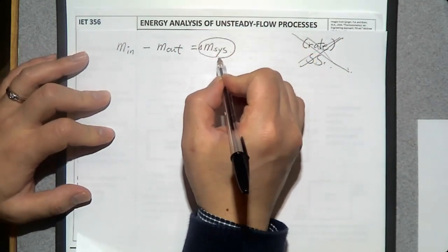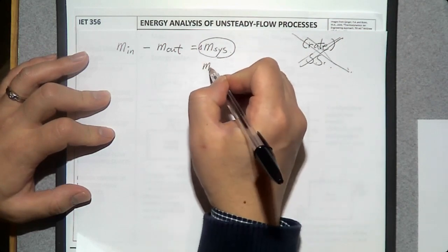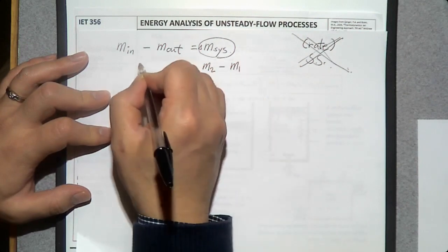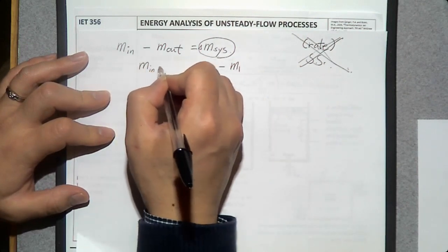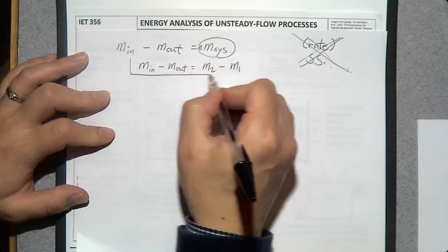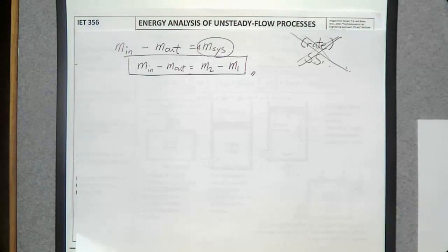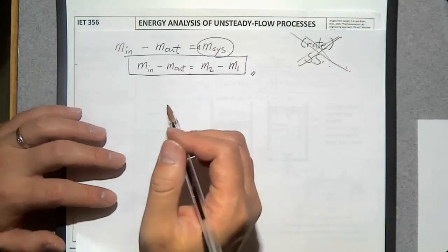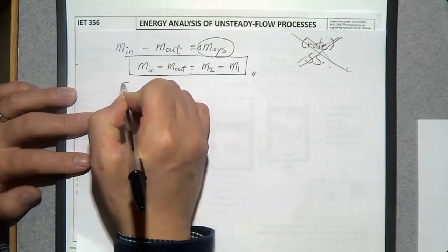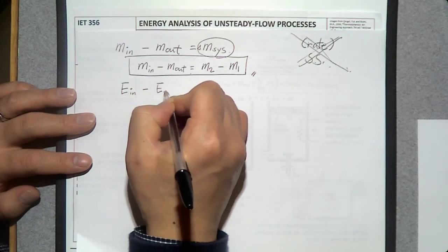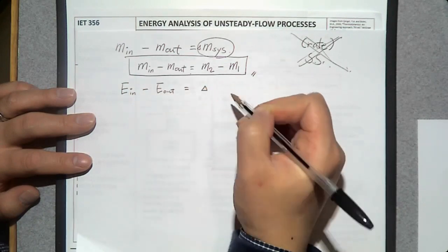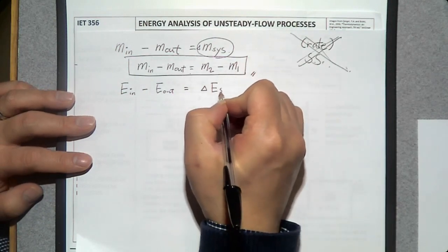How can you determine the change of energy of a system? Simply: final mass M2 minus initial mass M1. So the difference between mass transfer in and out equals M2 minus M1 — that is the mass balance equation for an unsteady open system. For the energy balance equation of an unsteady system: energy transfer in minus energy transfer out equals the change delta in energy of the system.